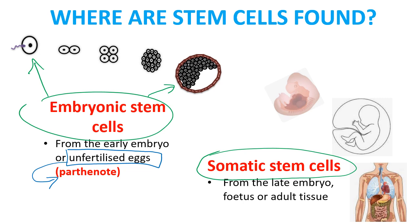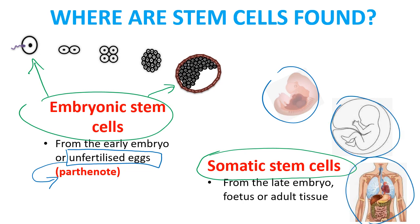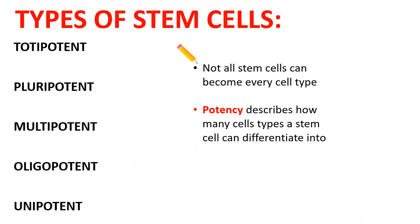Stem cells collected from the late embryo, fetus, or an adult are called somatic stem cells — somatic tissue is just tissue that's not sperm or eggs, so normal body tissue. Not all stem cells can become every cell type; some are limited in how many types of cells they can become. This is called potency — potency is just how many cell types a stem cell can differentiate into.